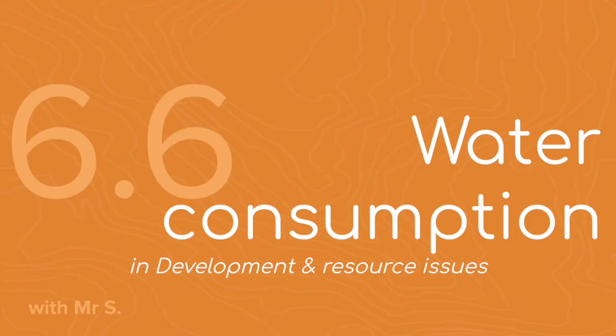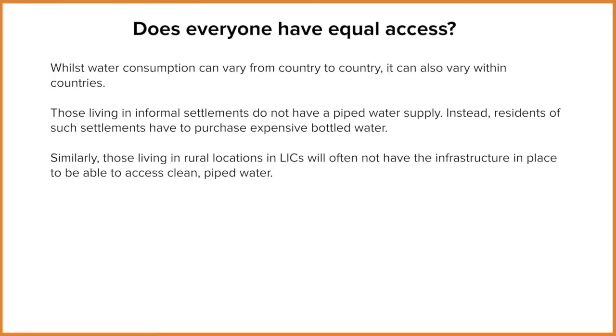The demand for water across the globe is higher now than it has ever been before. With more people on the planet and an increase in the number of factories which require water for production, available water sources are under increased pressure. Due to this increased global demand, not everyone has sufficient access to a clean water supply. As a result of both factory demand and consumerism, HICs are using more water than LICs. So let's have a look at that disparity in a bit more detail.